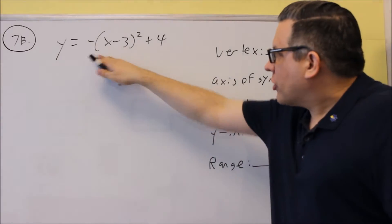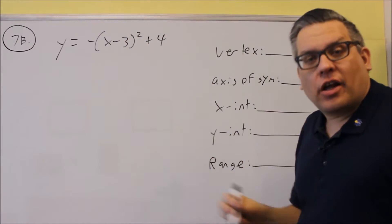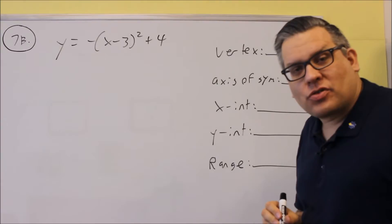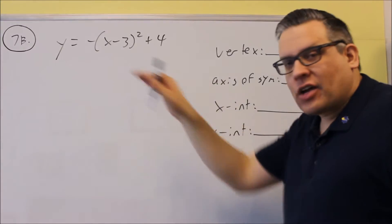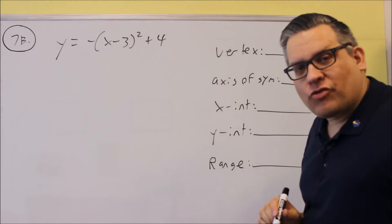The other one in 7a had ax² + bx + c. So this time we're not going to use the vertex formula. Now we can, if we were to expand all this out, foil this out, add all the like terms together, we could get it into ax² + bx + c form. But that's a lot of extra work for you to do. On this one, if you notice that it's already in vertex form,